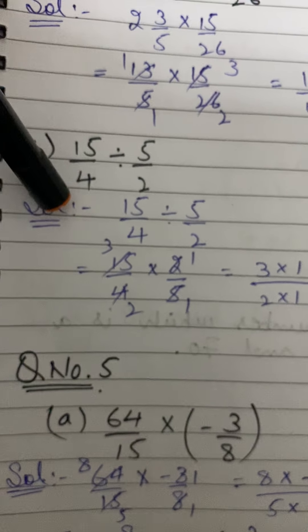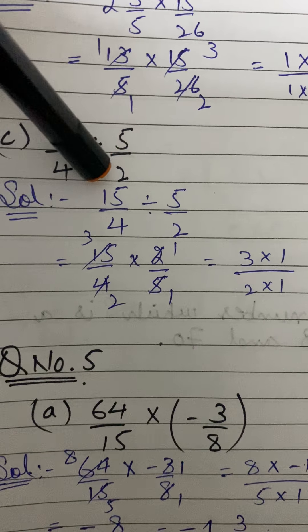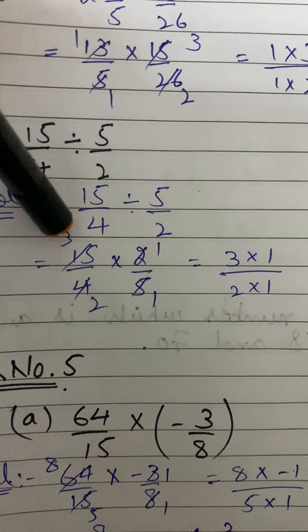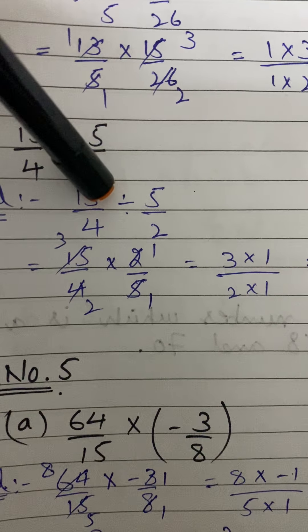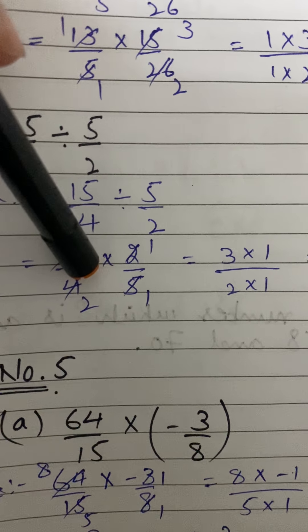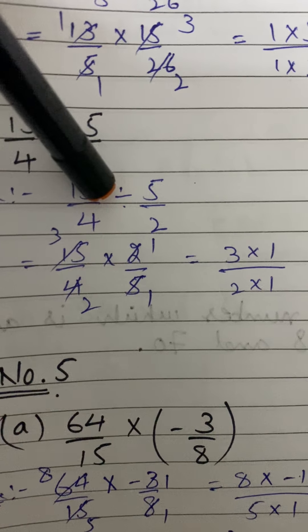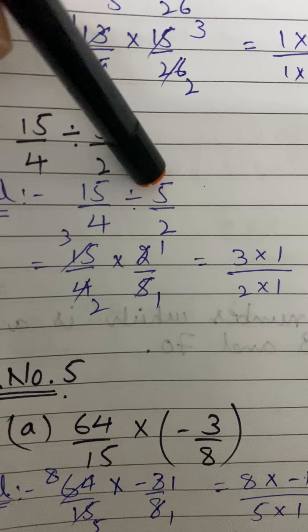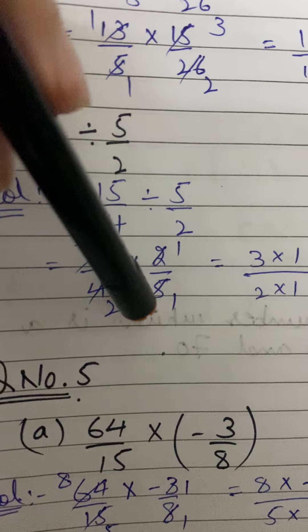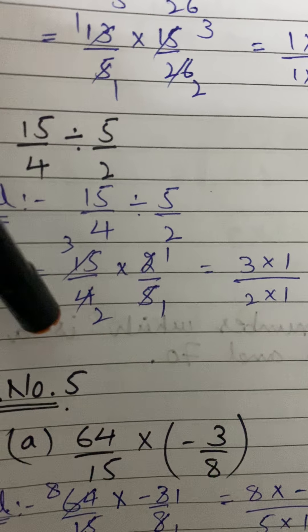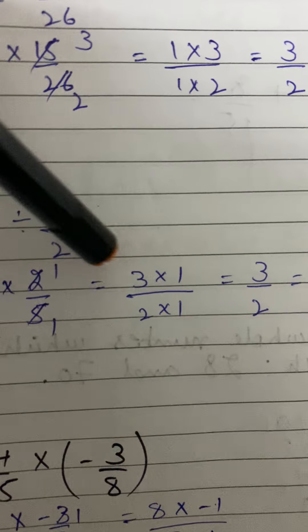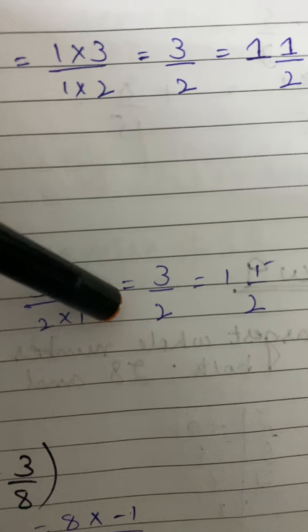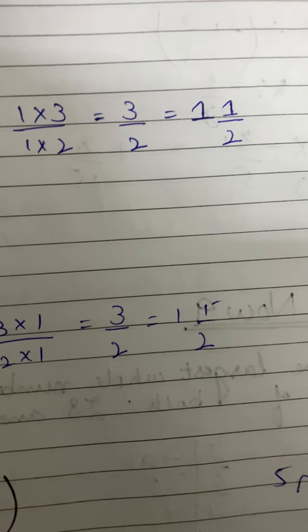Part c: 15 over 4 divided by 5 over 2. We change division to multiplication and take the reciprocal of the next fraction: 5 over 2 becomes 2 over 5. Cancelling: 5 ones are 5 and 5 threes are 15; 2 ones are 2 and 2 twos are 4. We get 3 times 1 over 1 times 2 — that's 3 over 2, so the answer is again 1 whole 1 over 2.